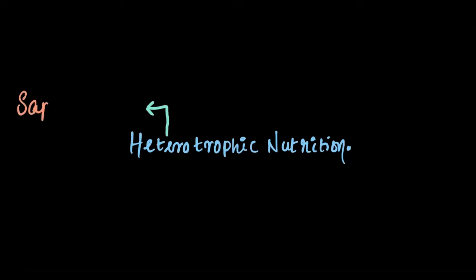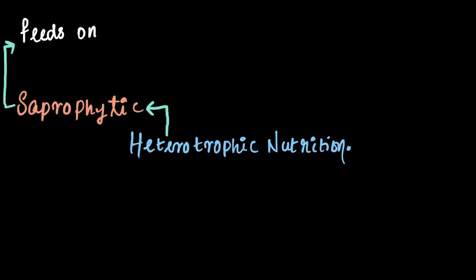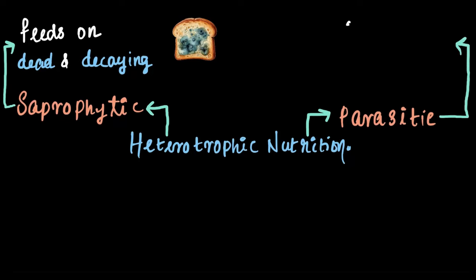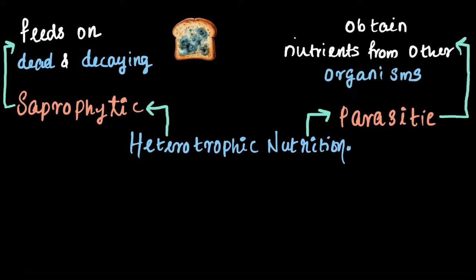Now that we have discussed different types of heterotrophic nutrition, let's summarize each of them. The first type is saprophytic nutrition, where organisms feed on dead and decaying matter — just like mold surviving on decaying bread. The second type is parasitic nutrition, where organisms obtain nutrients from other organisms known as the host. Remember, here the host does not benefit. An example would be Plasmodium, which lives on the mosquito.